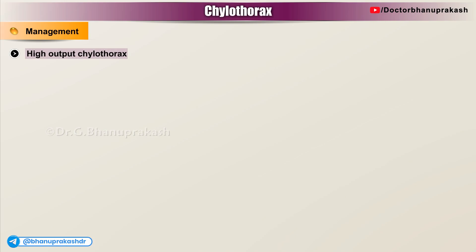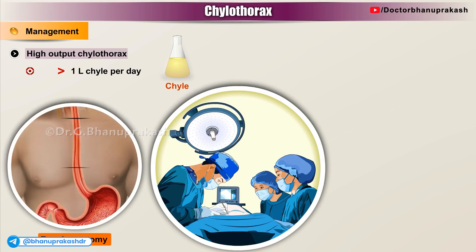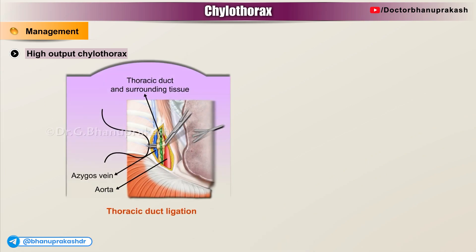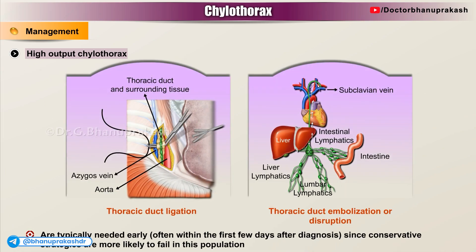High-output chylothorax: Estimated or known volume of more than 1 liter of chyle per day is most commonly seen in post-surgical patients, especially after esophagectomy, and those with liver cirrhosis. In such patients, thoracic duct ligation or embolization are typically needed early, often within the first few days after diagnosis, since conservative strategies are more likely to fail in this population.